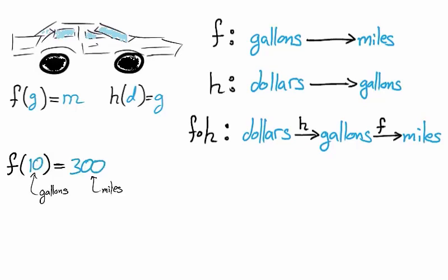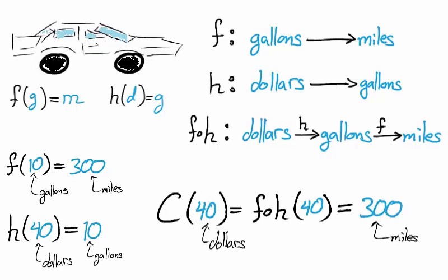Your cost of driving depends upon your fuel economy and the fuel costs. Suppose I drive 300 miles on 10 gallons of gas. That is, m equals 300, g equals 10, and f of 10 equals 300. Suppose that where I stop for gas sells gas at $4 per gallon, or one quarter of a gallon for $1. I spend $40, or 10 equals h of 40. The cost function takes in $40 and outputs 300 miles driven.